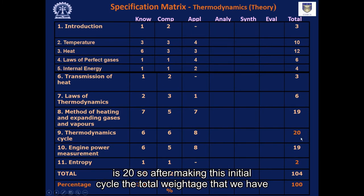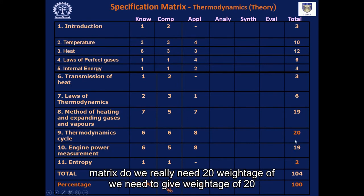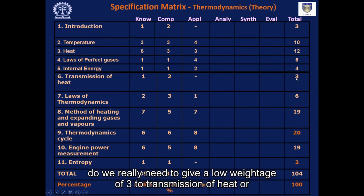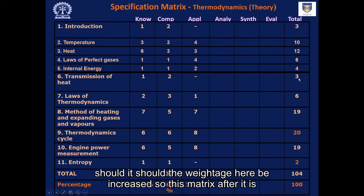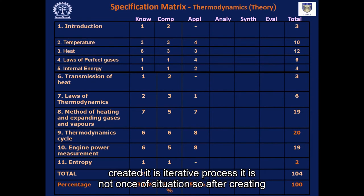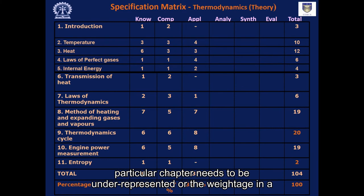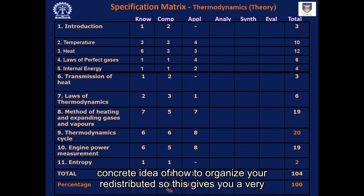After making this initial matrix, we need to take a relook at it. Do we really need to give a weightage of 20 to Thermodynamic Cycle, or are we over-representing that chapter? Should the weightage for Transmission of Heat be increased from 3? This is an iterative process — not a one-time situation. You keep reviewing the matrix and deciding whether any chapter or area is over-represented, under-represented, or needs its weightage redistributed.